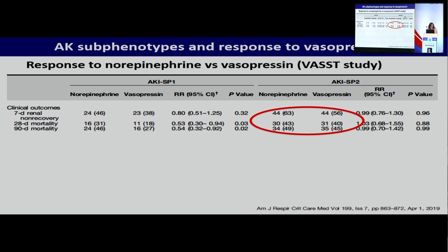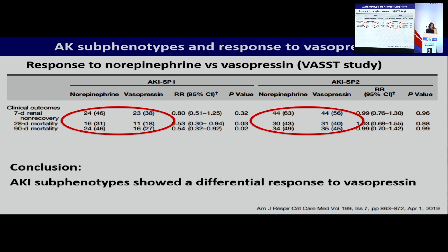And they could also show, again, that patients could be identified — there were two different types of AKI, different sub-phenotypes. But in this case, there was also a difference in response. Patients with sub-phenotype 2 did not benefit from the addition of vasopressin — mortality was equal in both groups. But patients with sub-phenotype 1 had a clear benefit from receiving vasopressin, with lower mortality and a lower risk of non-recovery. This means that looking at different sub-phenotypes may help us in future identify those patients who are likely to respond better to a particular treatment, and may also identify those who are completely unlikely to respond, or may even come to harm.